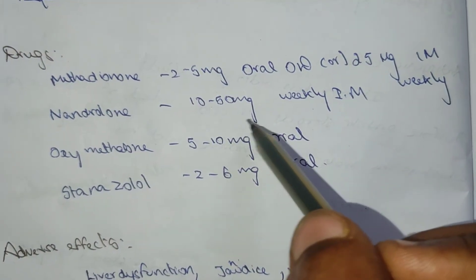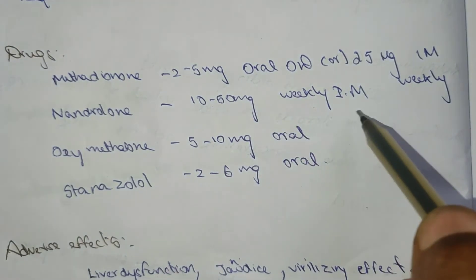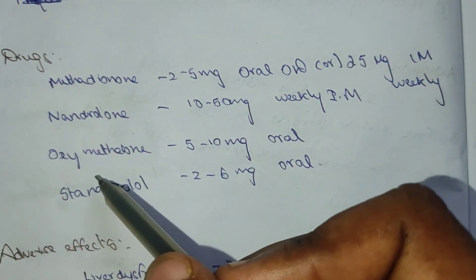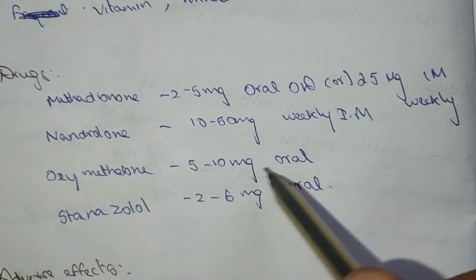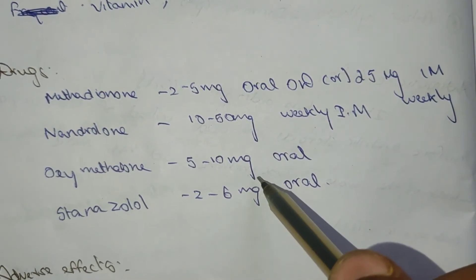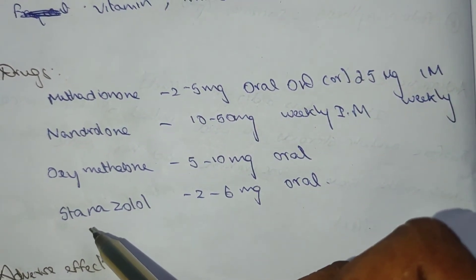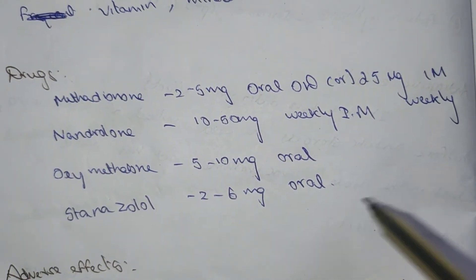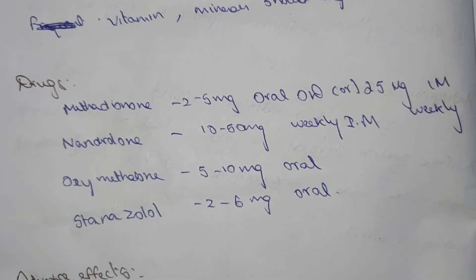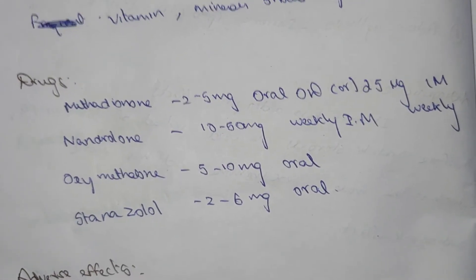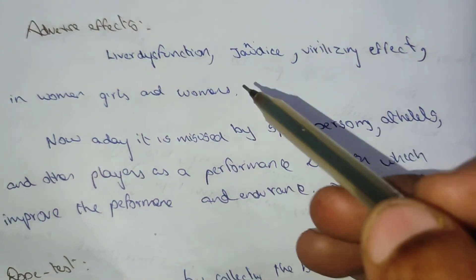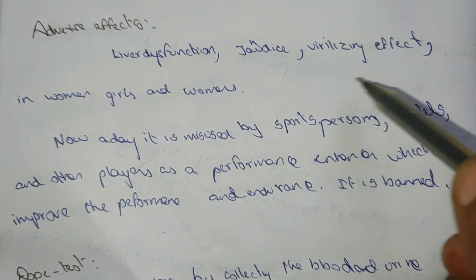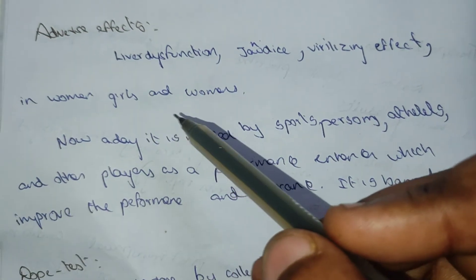Dosage forms: nandrolone 10 to 50 mg weekly intramuscular, oxymetholone 5 to 10 mg oral, stanozolol 2 to 6 mg oral. Adverse effects include liver dysfunction, jaundice, and virilizing effect in women and girls.